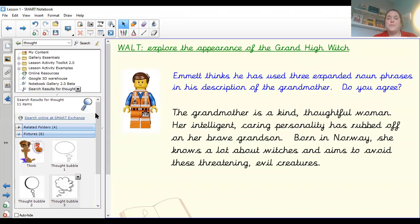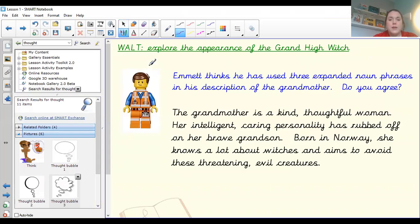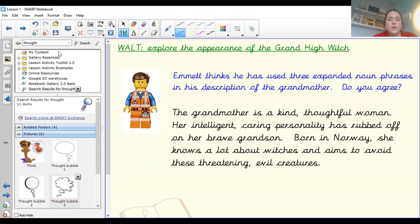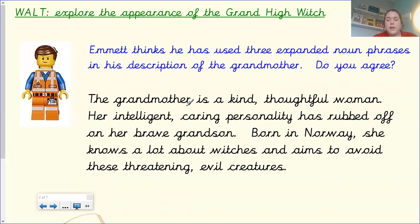OK, let's have a look together now. Get my editing pen. So, the grandmother is a kind, thoughtful woman. There we are. We've got a noun here. The noun is woman, and we've got two adjectives in front of it. That's my expanded noun phrase. Her intelligent, caring personality. Personality is my noun, and it's described by the two adjectives, intelligent and caring.